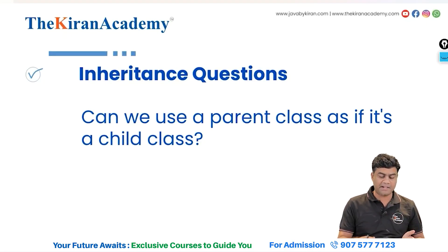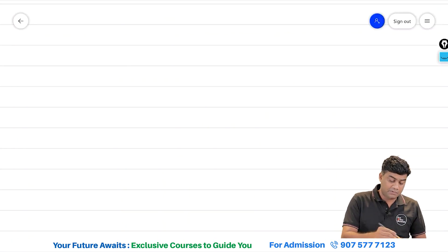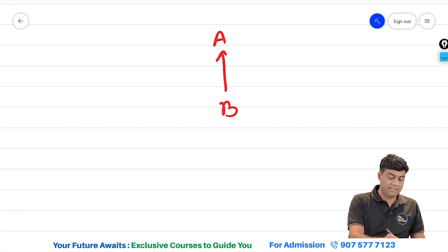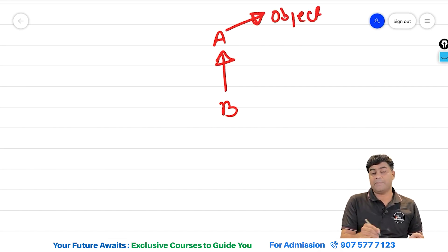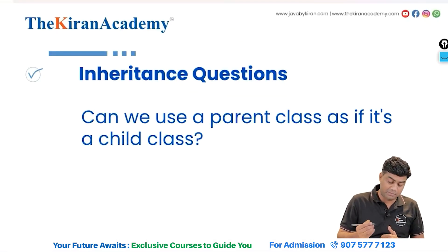Coming to first question, can we use a parent class as if it's a child class? Yes. Parent class is not always a parent class. Let's say there are two classes, one is A and another is B. In this case, it looks like A is a superclass and B is a subclass, but there is another hidden class that is object. So answer is yes, parent class also can act as a subclass of some other class.